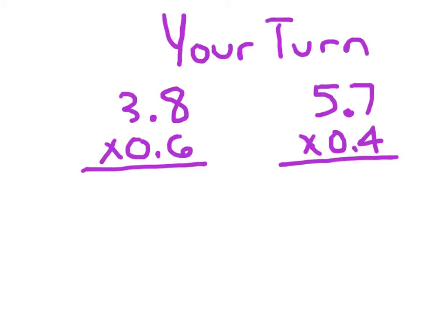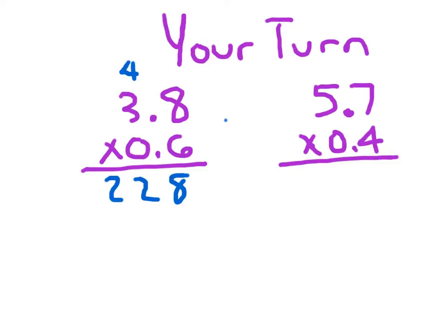Here are a few problems for you to try. Copy them down, solve them, and hit pause. For that first problem, ignore the decimal point. 6 times 8 is 48 — place the 8, regroup the 4. 6 times 3 is 18, plus 4 is 22. Since there are two decimal places in the problem, I place the decimal point to give 2.28. For 5.7 times 0.4, the answer is also 2.28, and the two problems happen to give the same answer.